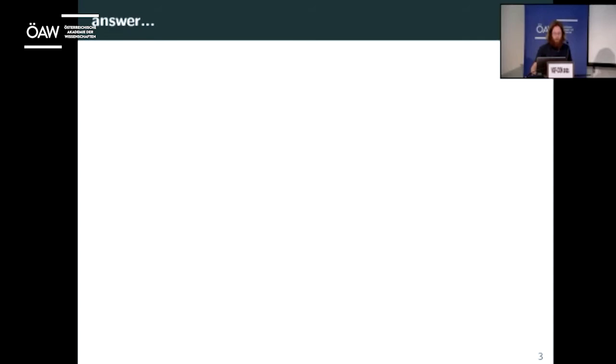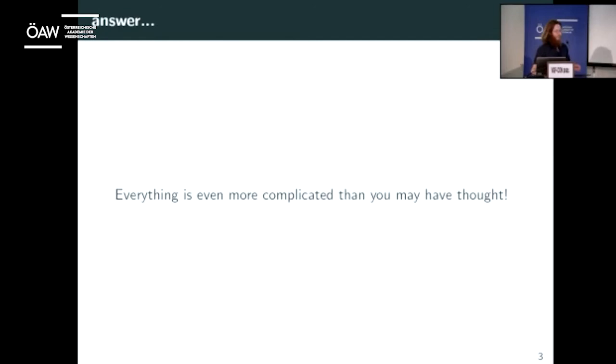The main conclusion, to skip ahead: what did generalized probabilistic theories teach us about this question? Well, they basically teach us that everything is just more complicated than you might have thought already. So if we thought the problem of understanding quantum gravity was difficult, well, maybe it's actually worse.